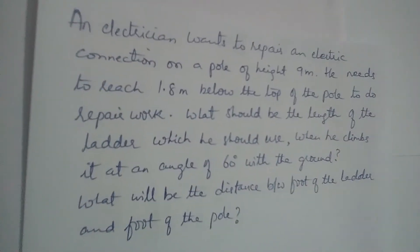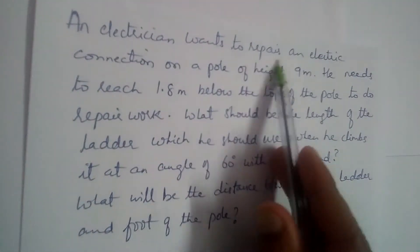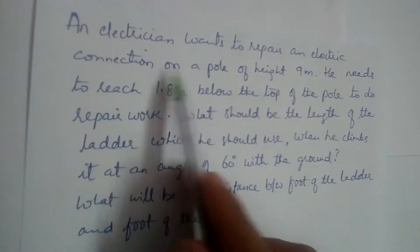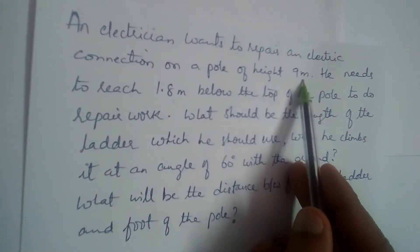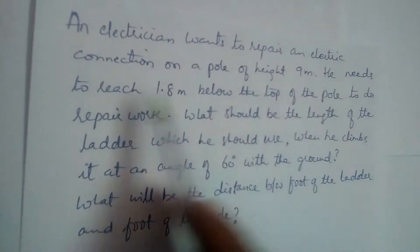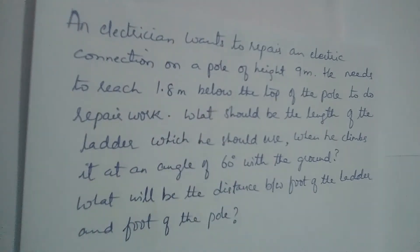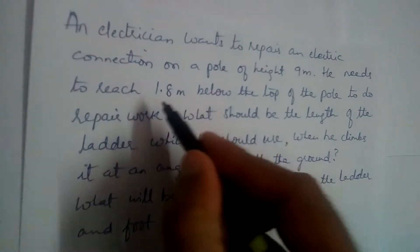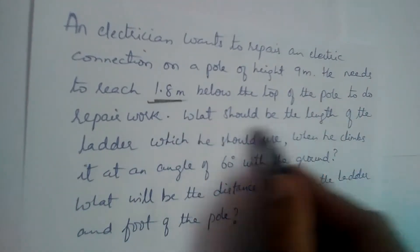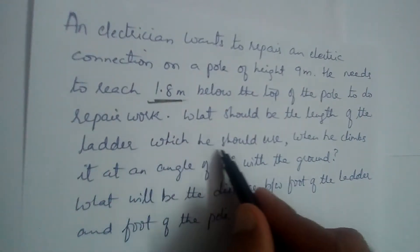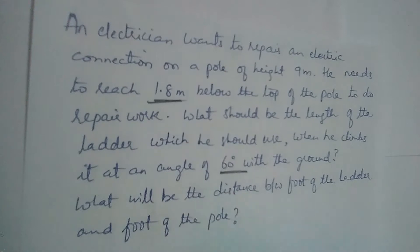We have a question here. An electrician wants to repair an electrical connection on a pole of height 9 meters. He needs to reach 1.8 meters below the top of the pole to do the repair work. What should be the length of the ladder he should use when he climbs at an angle of 60 degrees with the ground?